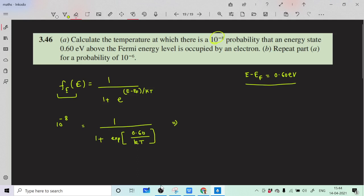1 upon 1 plus e raised to 0.6 by kT can be approximated as e raised to minus 0.60 by kT, and this is equal to 10 to the minus 8.